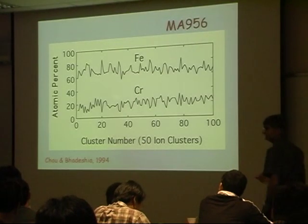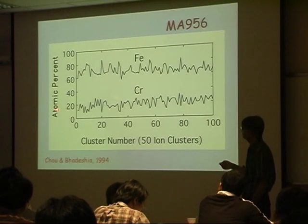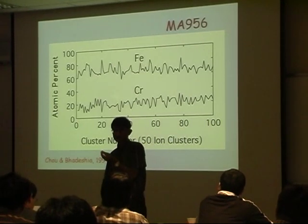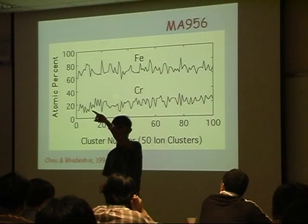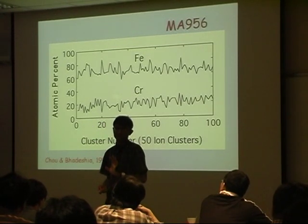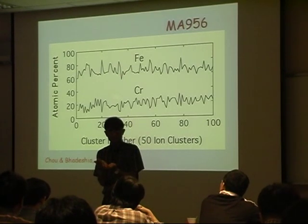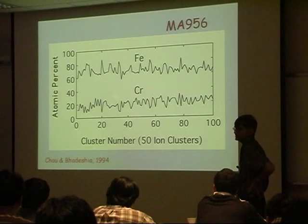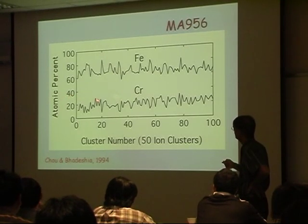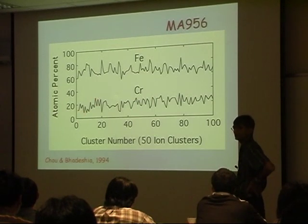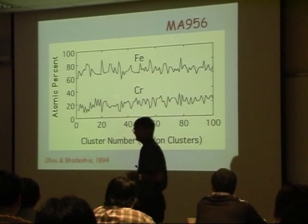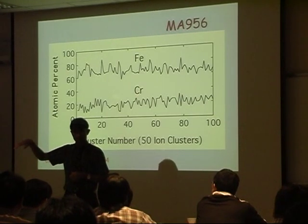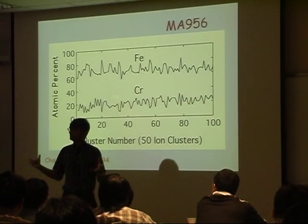He obtained many results, and this is one of them — plotting the concentration versus the chemical composition of 50-atom clusters. If I plotted composition atom by atom, you would get 0% or 100% chromium, which is not very useful. So here we are plotting the concentration of 50-atom clusters. You can see lots and lots of variations — something like 30% chromium here and 10% chromium there. The question is: does this mean we haven't properly alloyed the material, or is this a completely homogeneous solution?